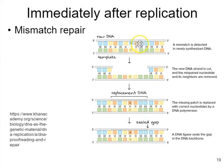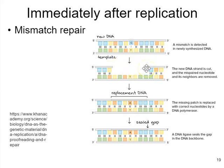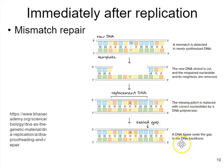The mismatch repair proteins recognize which strand the problem occurs on because it hasn't had the chance to be methylated yet. A group of proteins will come in and target that distorted region, yanking out a whole stretch of nucleotides right in that region, which leaves a gap. That gap is recognized by DNA polymerase 1 in E. coli — and a similar enzyme in humans — which fills in the gap. Then DNA ligase seals the phosphodiester linkages, giving you a corrected strand.